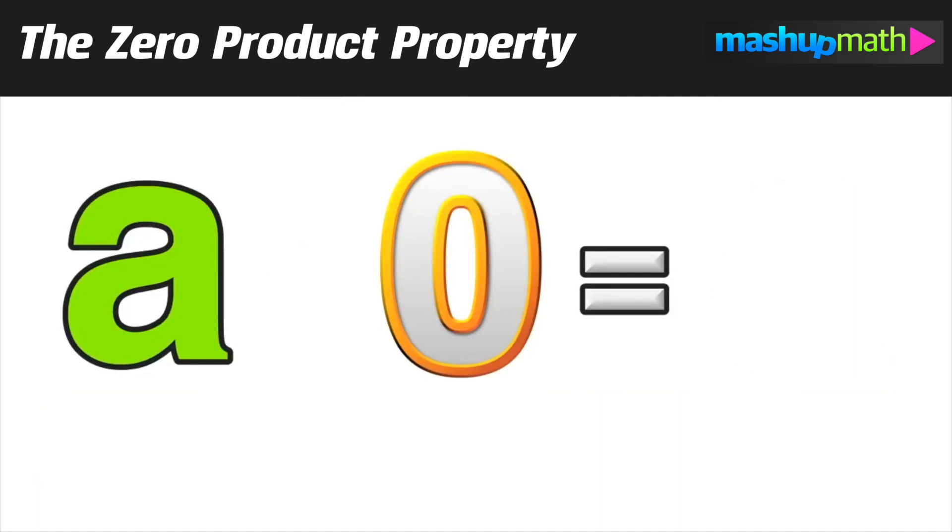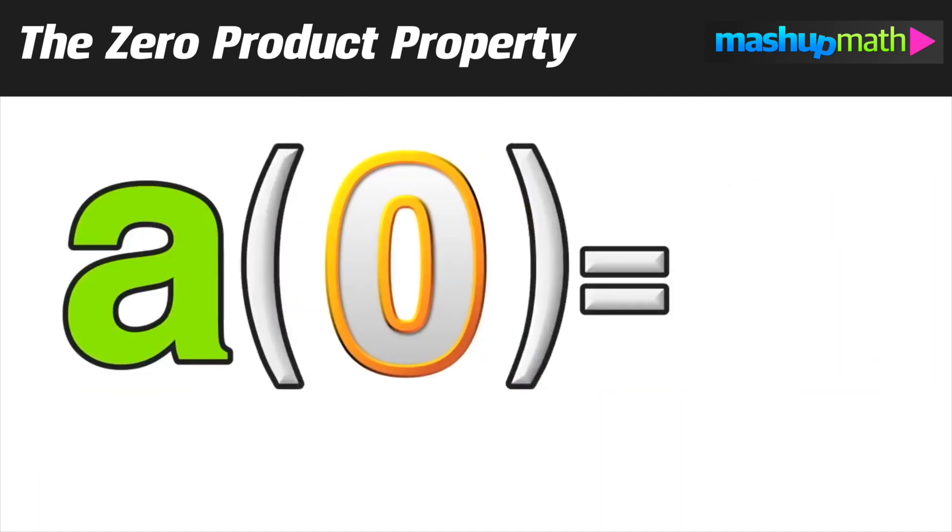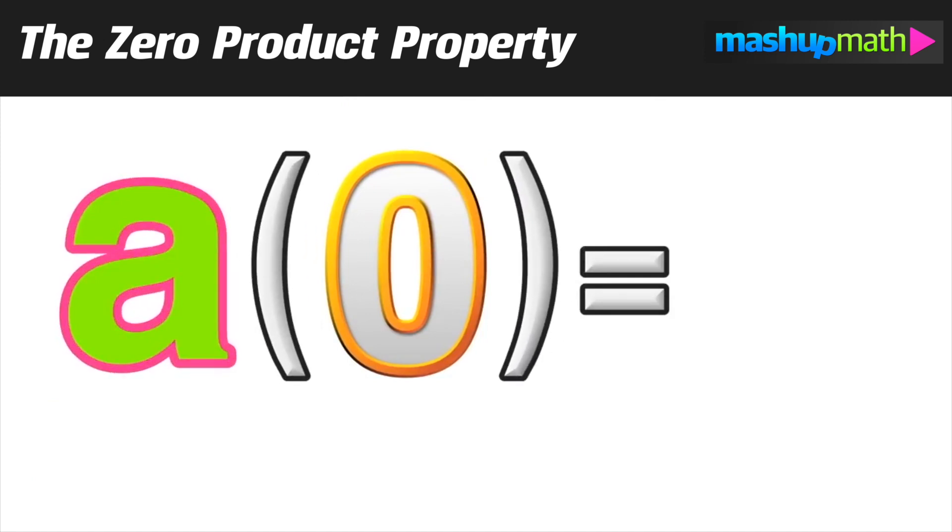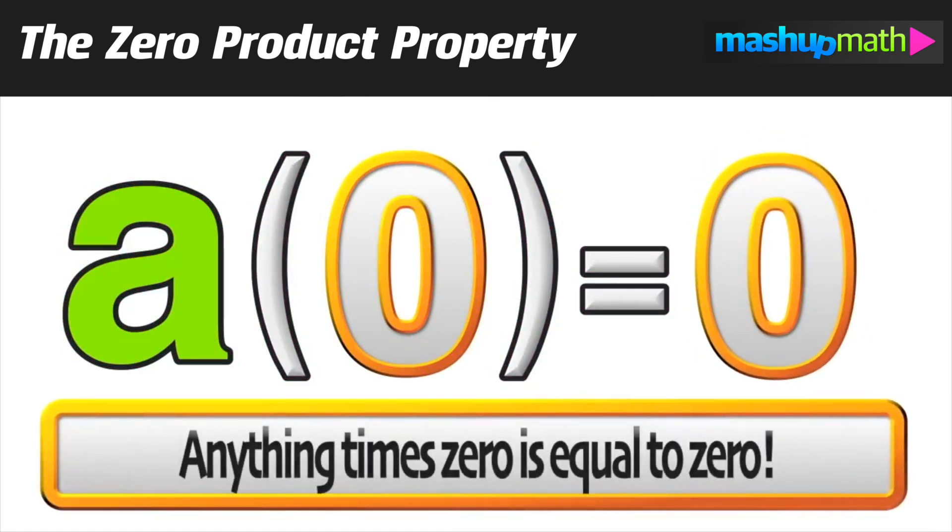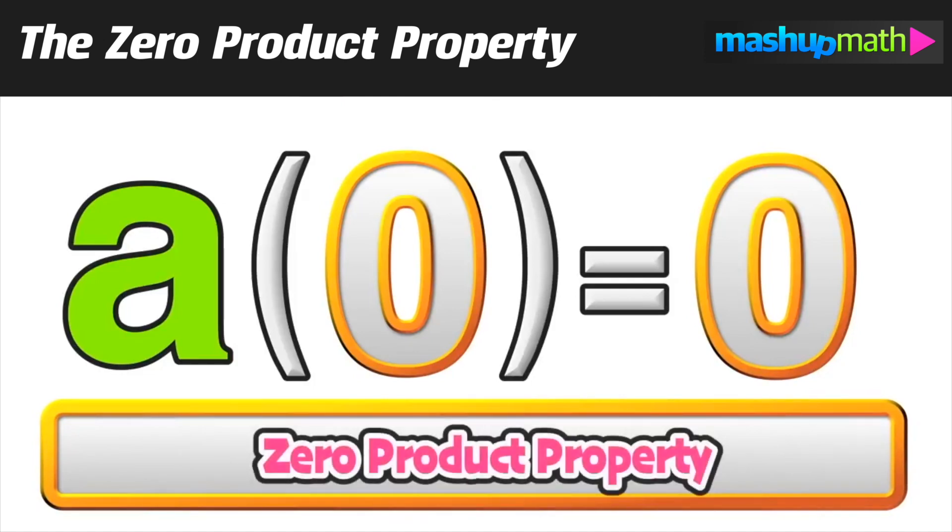Now, instead of addition, let's look at multiplication. If we take any real number, a, and multiply it by zero, we end up with zero, and we can say that anything times zero is equal to zero, and this is called the zero product property.